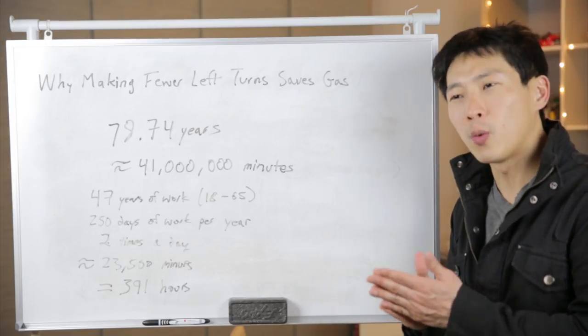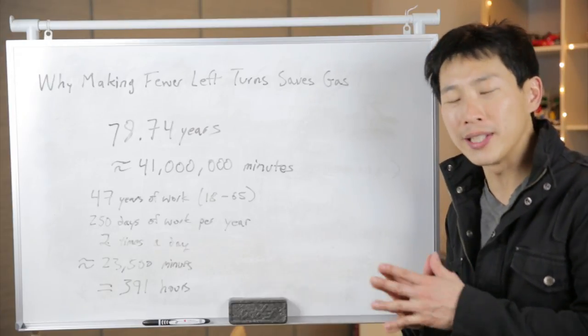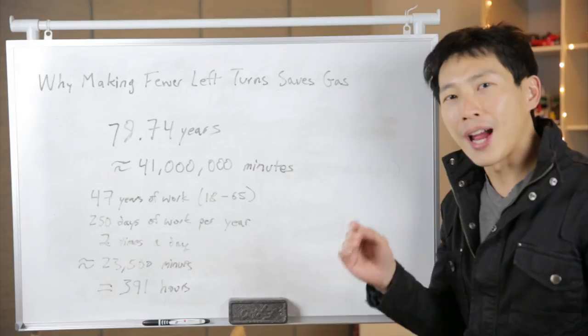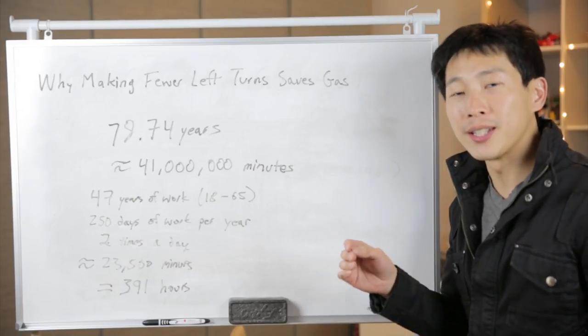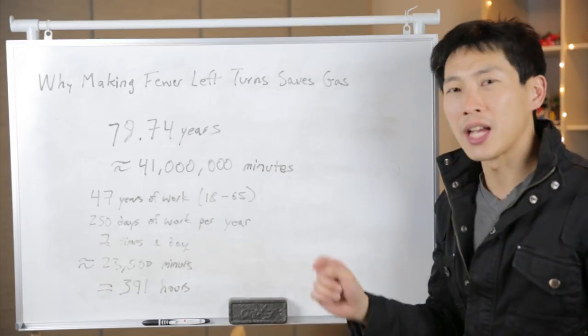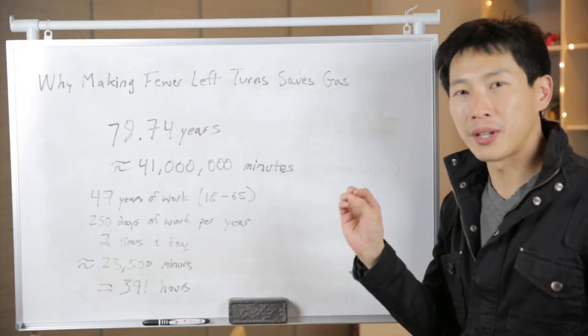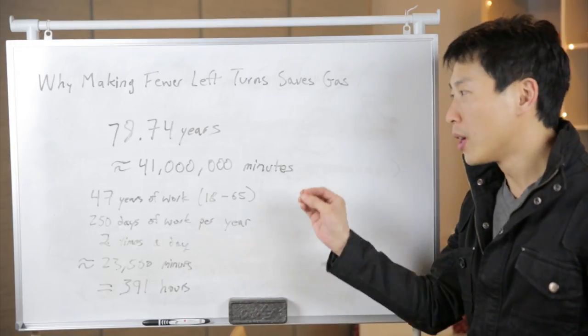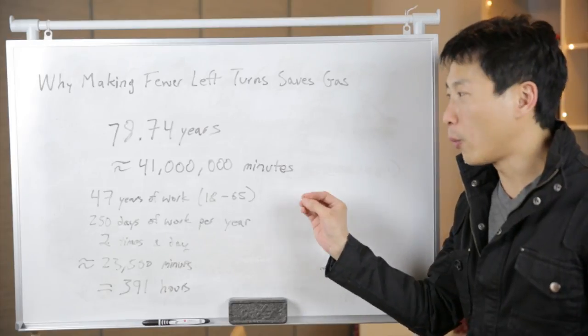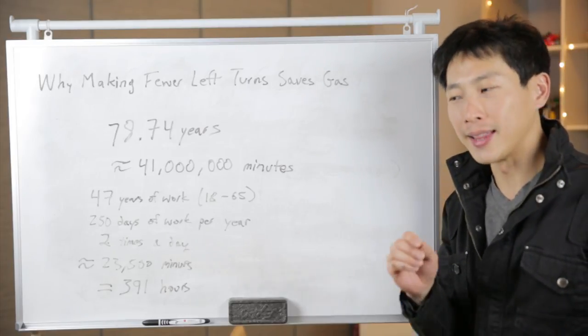So how much time does saving one minute each way of your commute really save you over a lifetime? For the average life expectancy of a person in the United States, it's about 78.7 years right now, currently. Now, if you put the years into the exact number of minutes that we're given, we are all given about 41 million minutes and this is it.